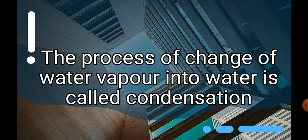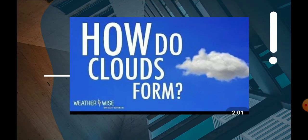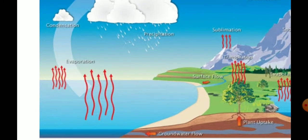Now we have understood what is meant by evaporation and what is meant by condensation. Our next question is: how are the clouds formed, and how does the rain come? Yes, let us find out why the clouds are formed. How do the clouds form? What is making the clouds form in the atmosphere?